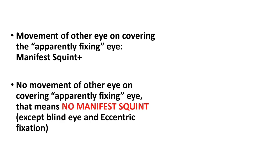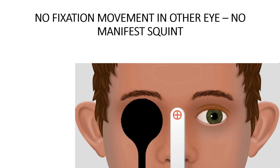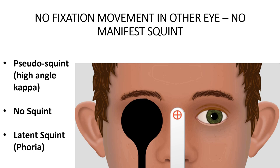If there is no movement of the other eye on covering the apparently fixing eye, this means there is no manifest squint — except in the cases of blind eye and eccentric fixation. If those are excluded, no movement means there is bifoveal fixation. In this example, we cover the right eye and there is no movement in the left eye, meaning no manifest squint. This could be either a pseudo squint (high angle kappa), no squint at all, or a latent squint which manifests only when we cover an eye — which we will diagnose with the uncover test.